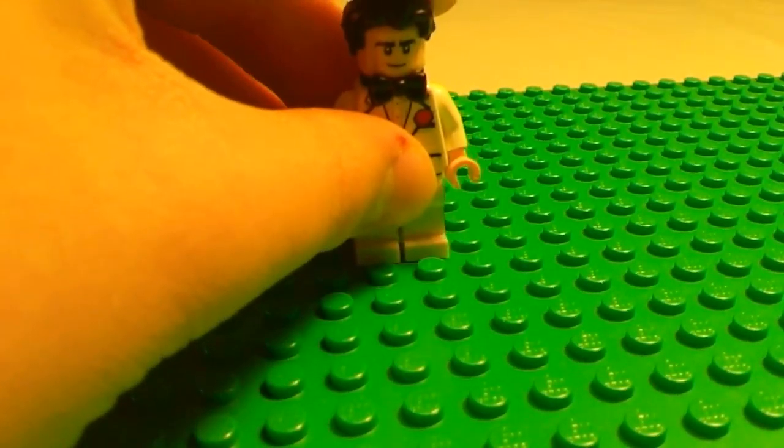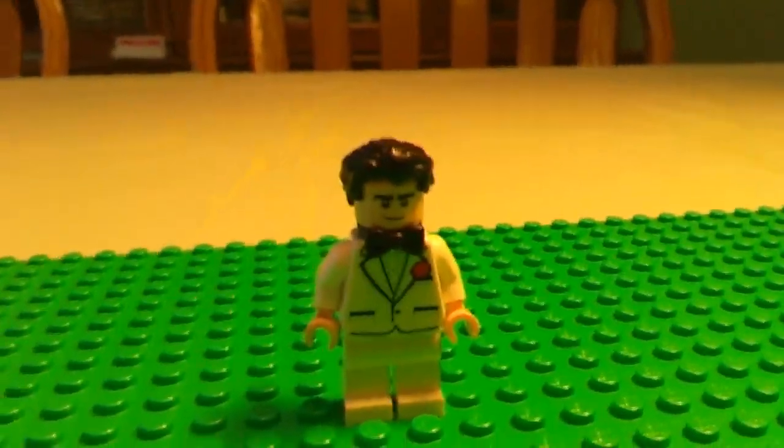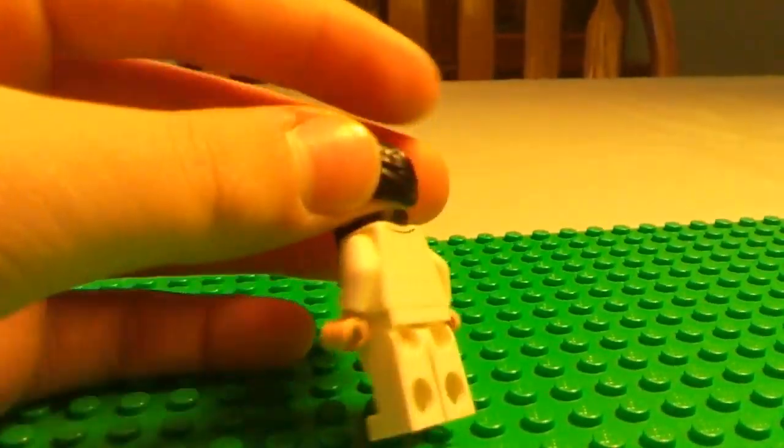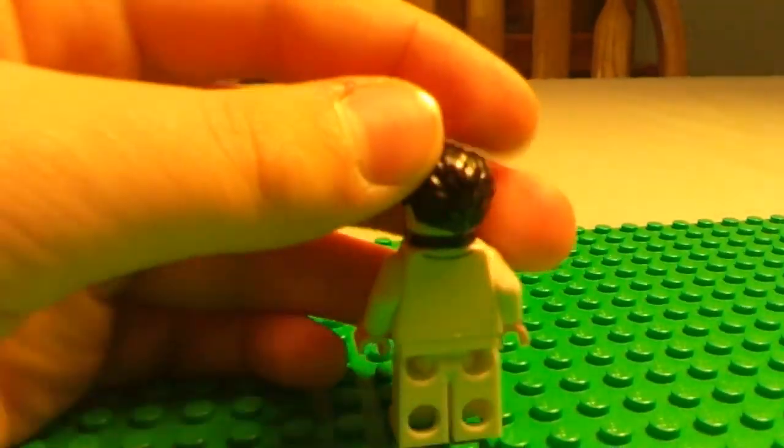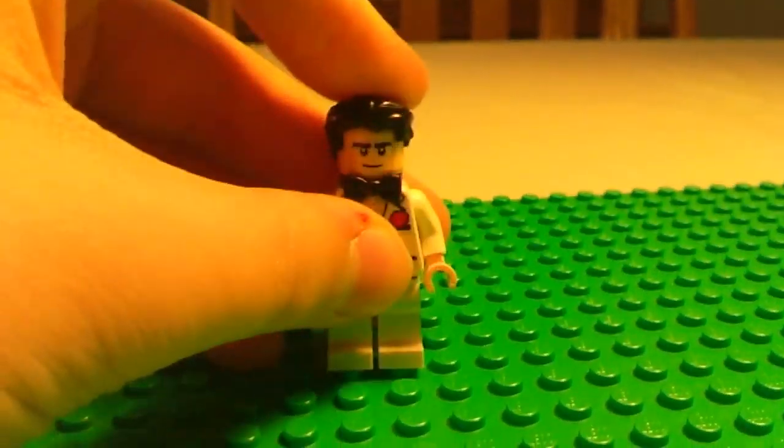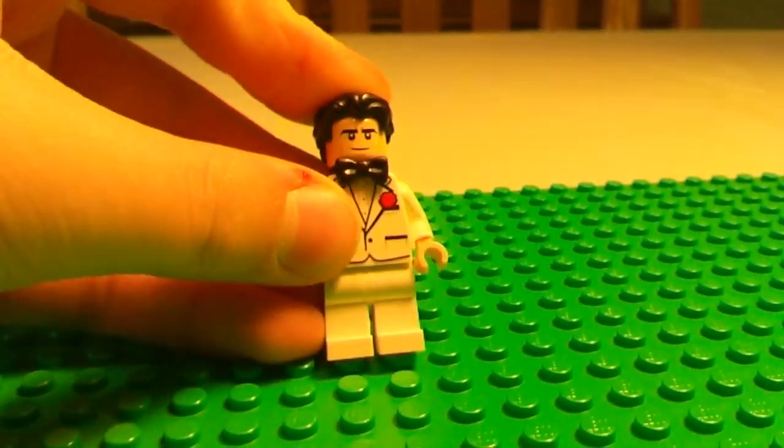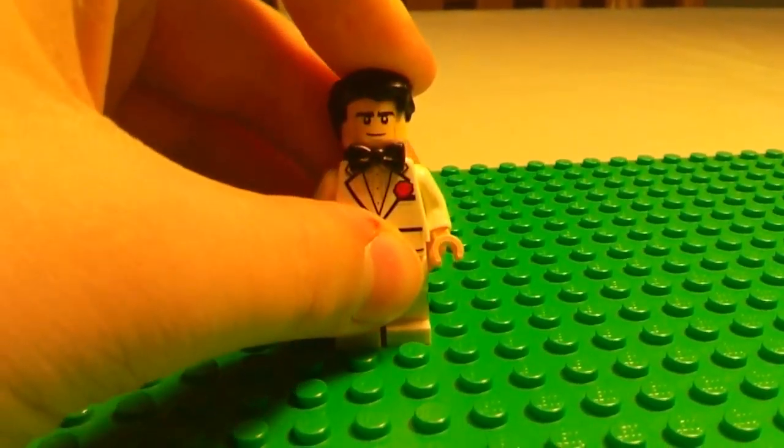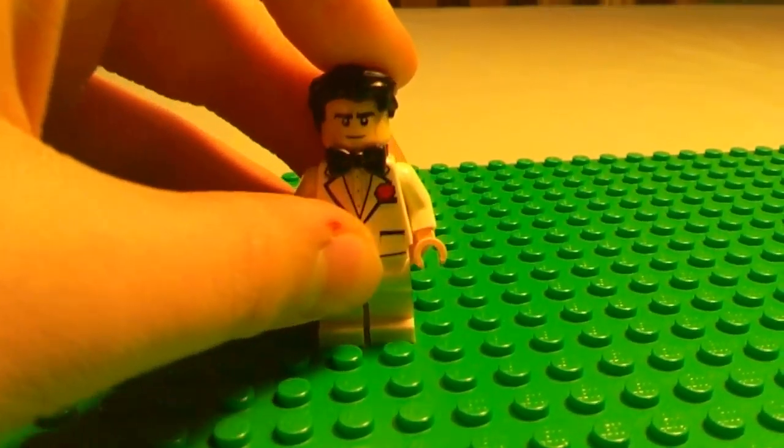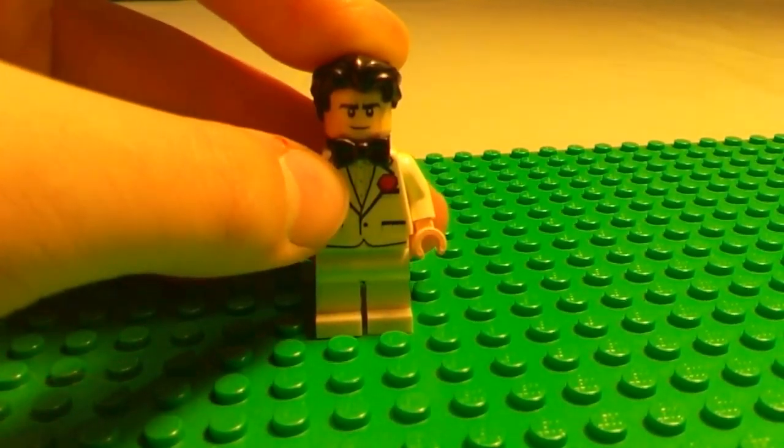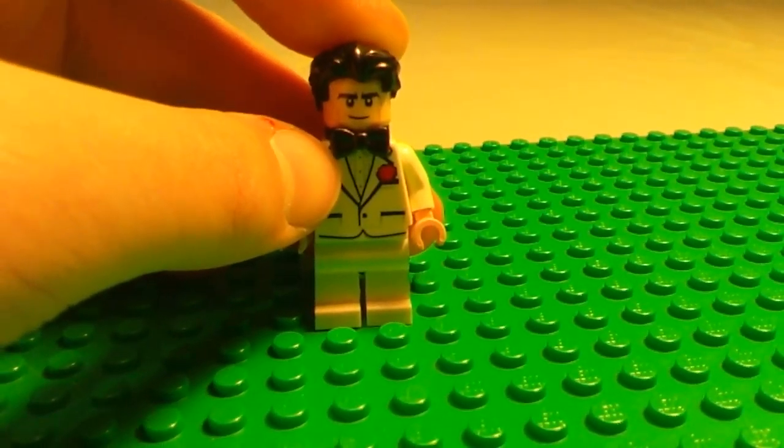Now I'm showing you the one and only Bruce Wayne. He's got very minimal printing on the back. He's got a tuxedo, just like Alfred. He's got a bigger bow than Alfred.